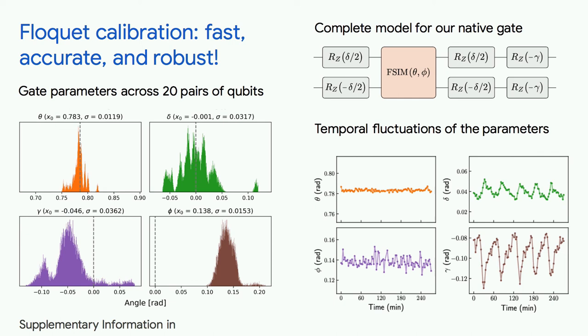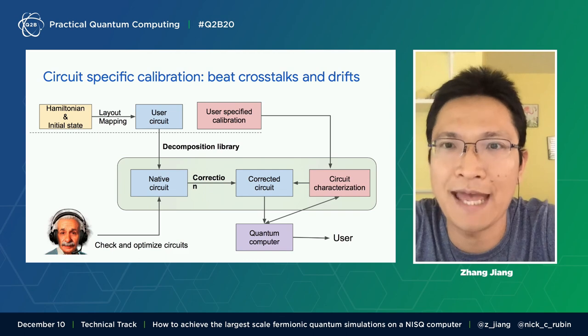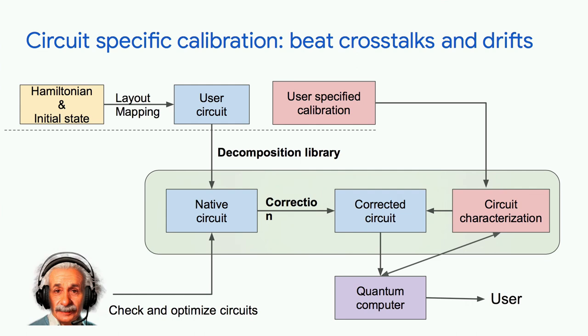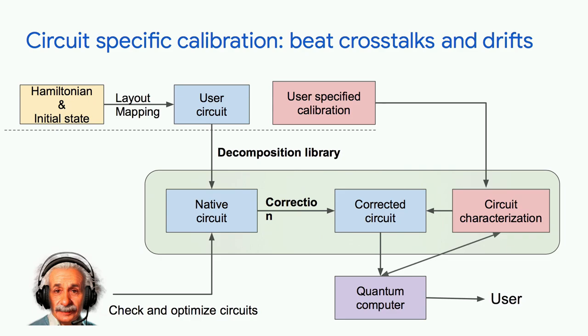And Floquet calibration is able to characterize these parameters and feed them to our algorithm to compensate for these errors. So in the future, we will have this built into our software system. The user can create their circuit and decompose it into our native circuit. Our service will check and optimize their circuit, and users can specify the method used for calibrating the circuit. Our circuit characterization algorithm will do that automatically for the user.